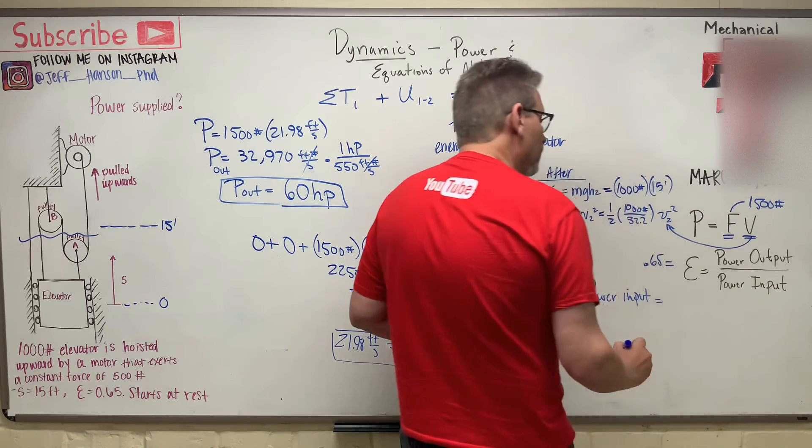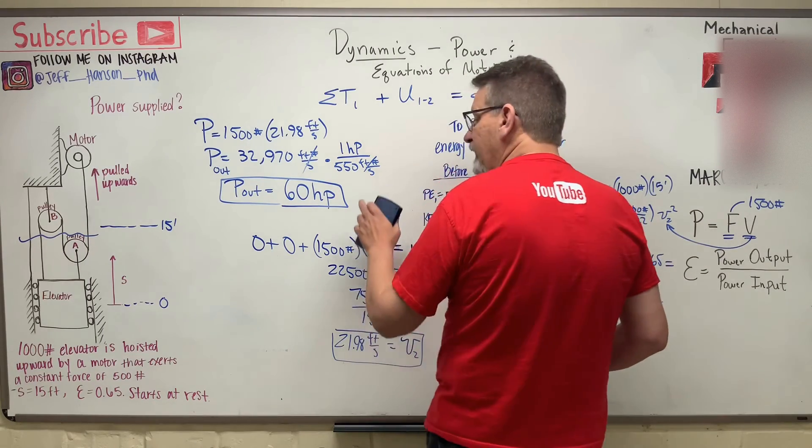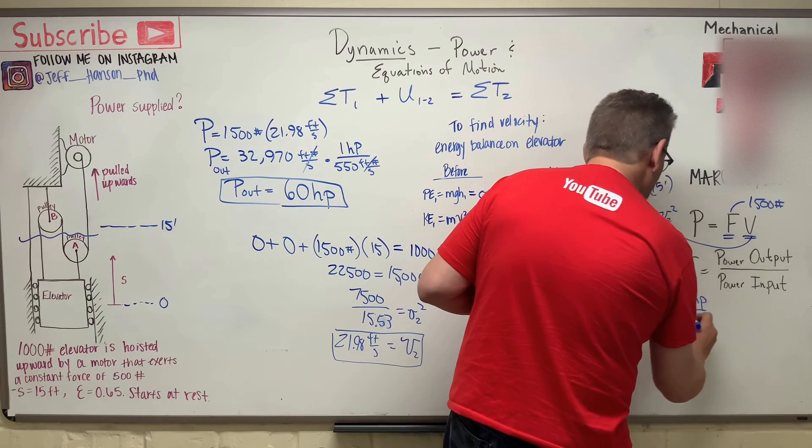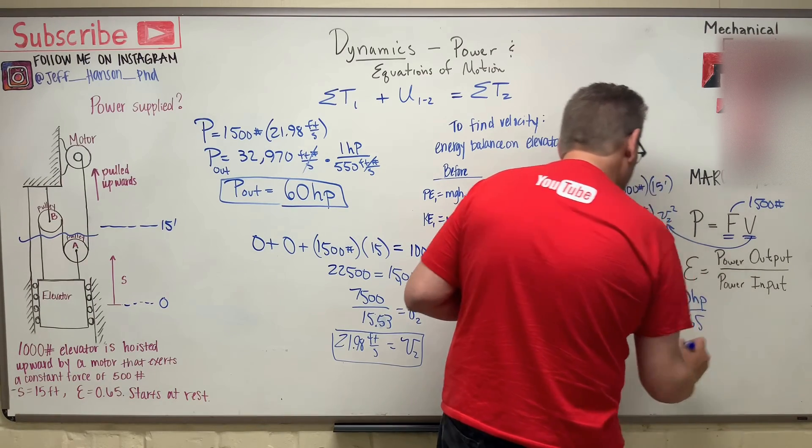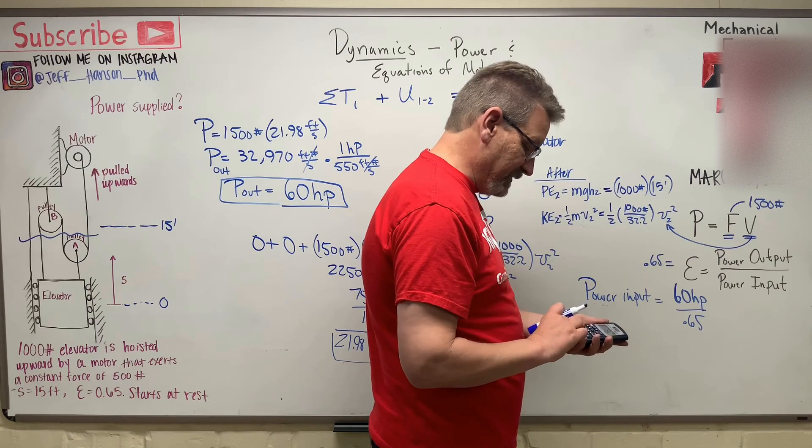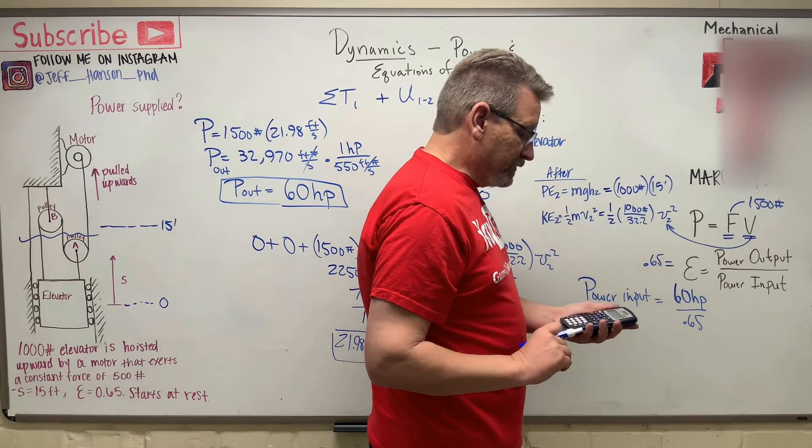is equal to power output, which we just found, 60 horsepower, divided by 0.65. So 60 divided by 0.65 equals 92.3.